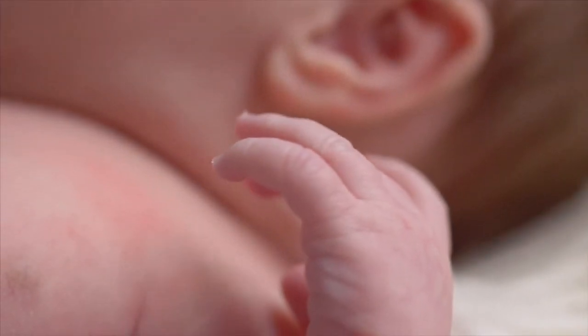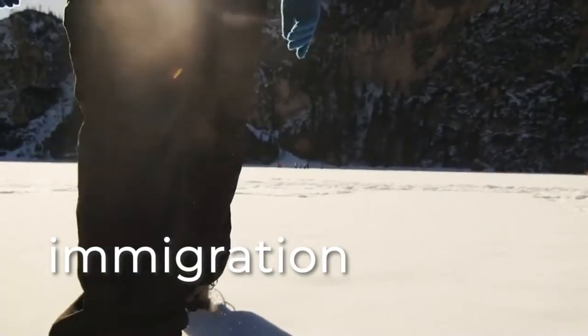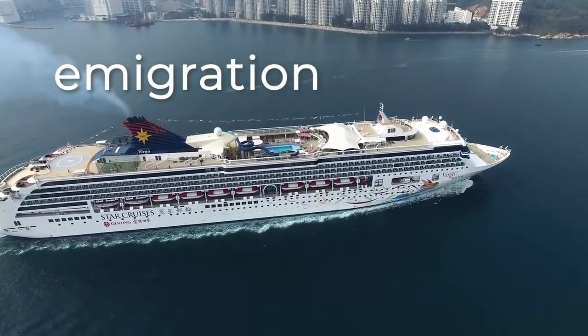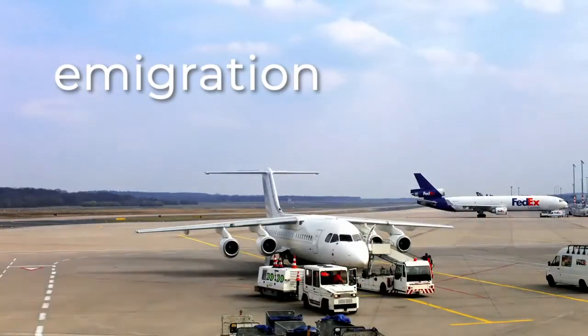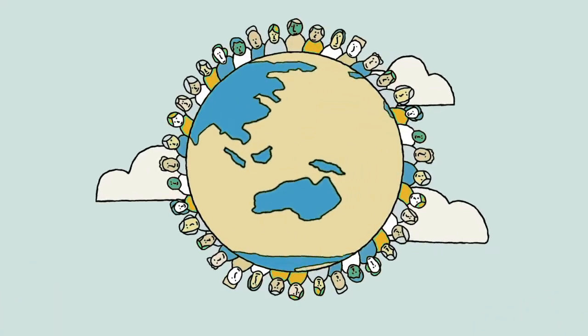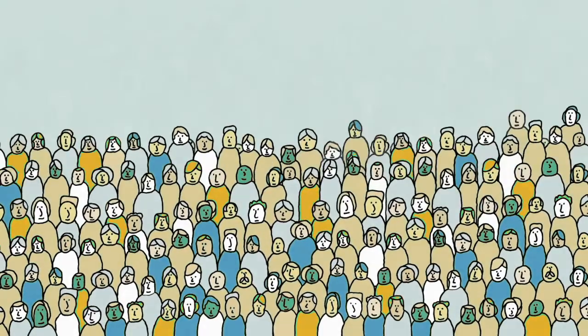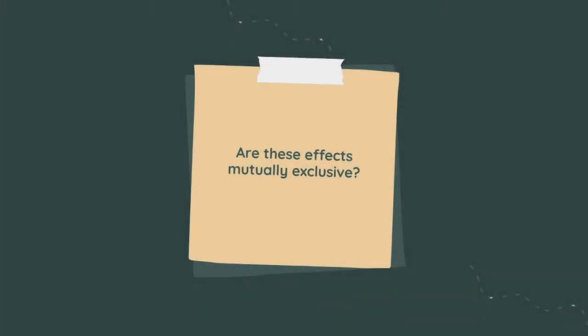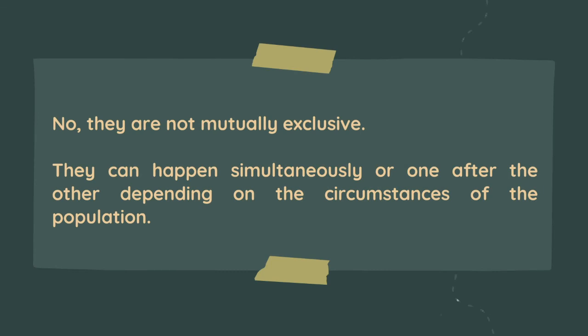These factors include birth, death, immigration — when new members enter the population but not through birth — and emigration, when members leave the population but not through death. Birth and immigration increase the population, while death and emigration decrease it. The effects of these factors are not mutually exclusive; they can happen simultaneously or one after the other depending on the circumstances.